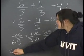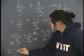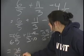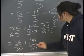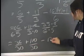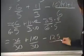And what we get from there is 36 thirtieths plus 110 thirtieths minus 125 thirtieths.